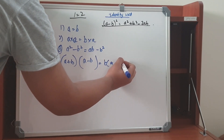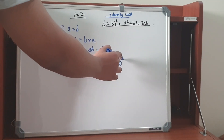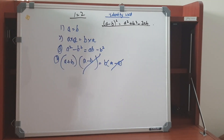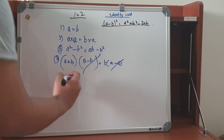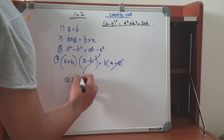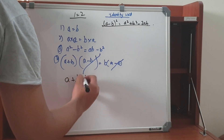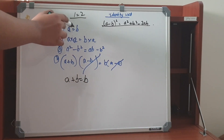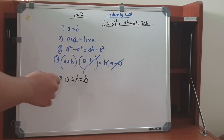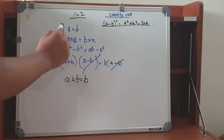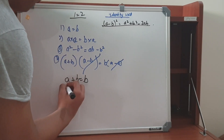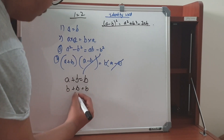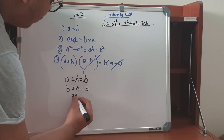Now we can cancel a minus b from both sides, so we can write a plus b is equal to b. Since we declared that a is equal to b, we can write b plus b is equal to b, so 2b is equal to b.